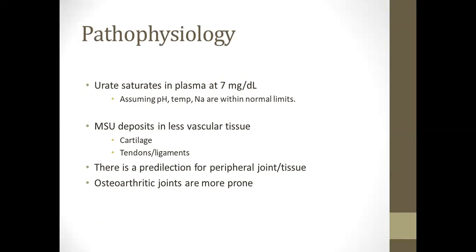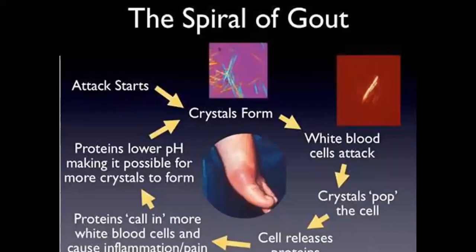Urate saturates in plasma at 7 mg per deciliter, assuming pH, temperature, and sodium are within normal limits. Monosodium urate crystals deposit in less vascular tissue. When pH is reduced, there is crystallization or deposition, usually in cartilage, which is less vascular tissue, and also tendons and ligaments. There is monosodium urate crystal deposition in these tissues with predilection for peripheral joints and tissues. Osteoarthritic joints are more prone.